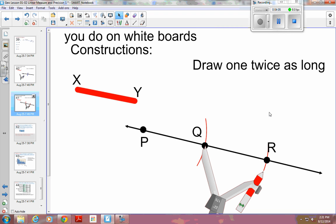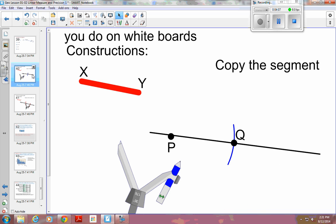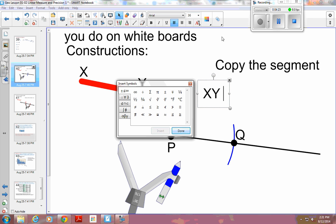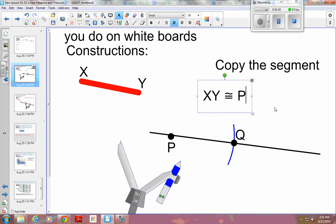So that's a construction, and this one was a construction for making a copy of the segment. You just make your compass the same width, put your point on P, and make an arc, and label the intersection Q. And so PQ, so XY would be congruent to PQ.